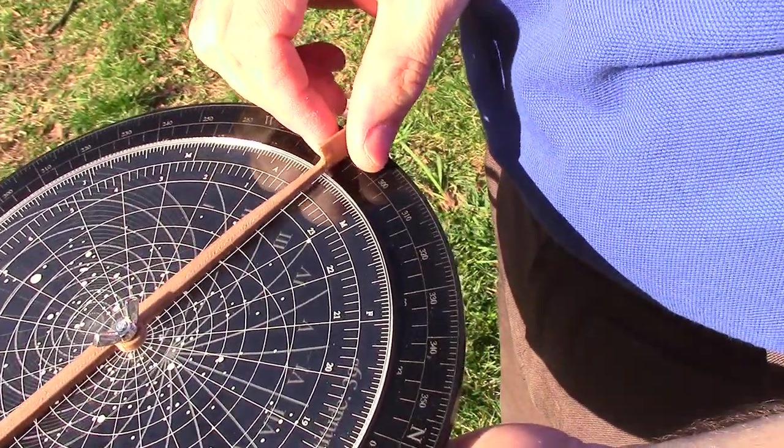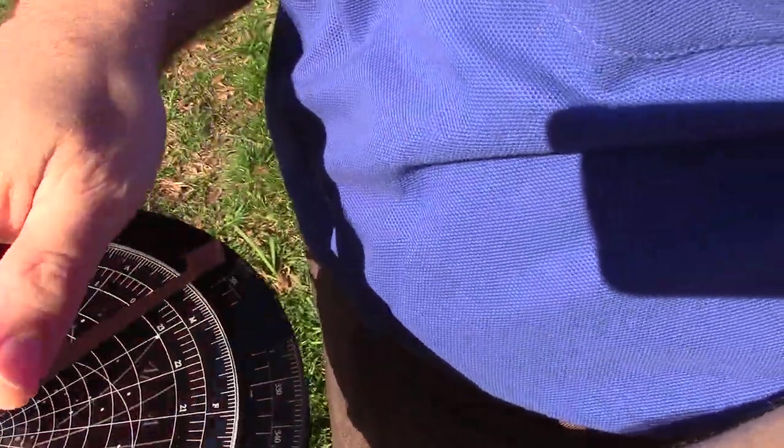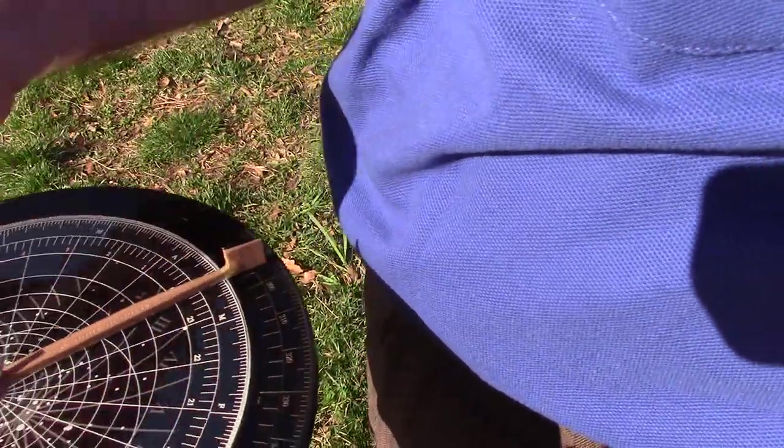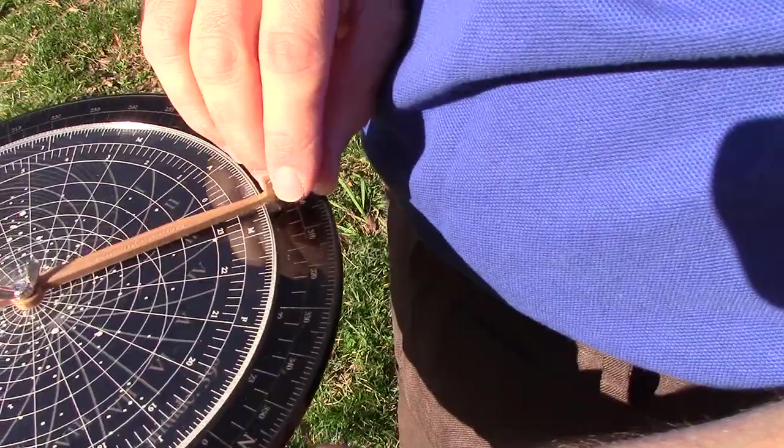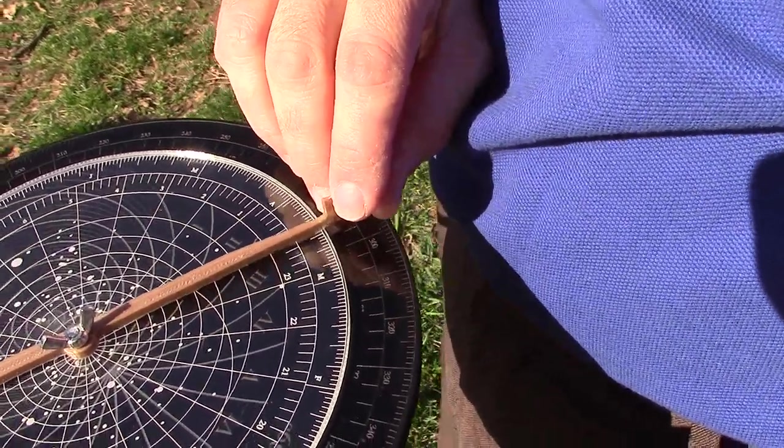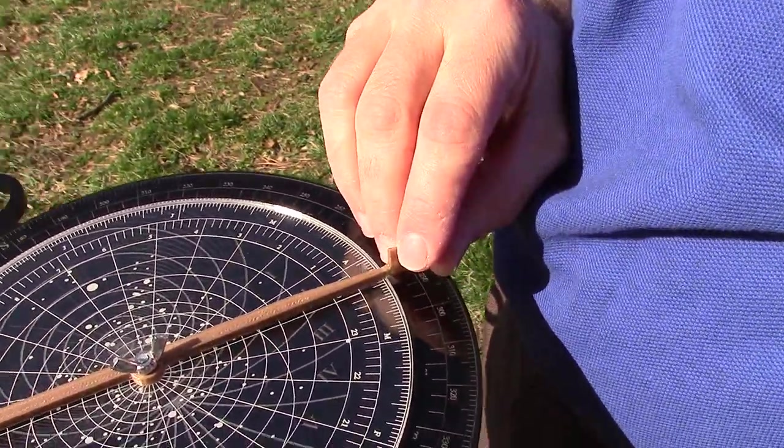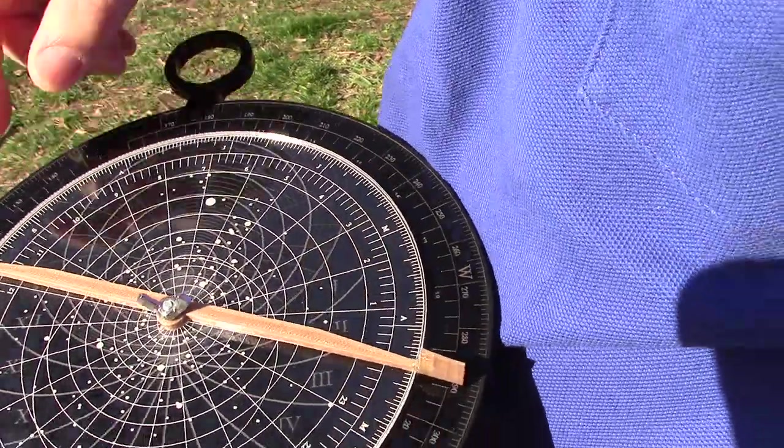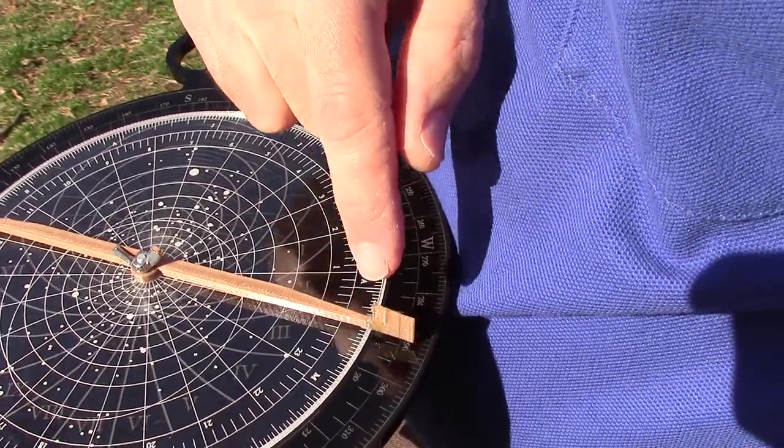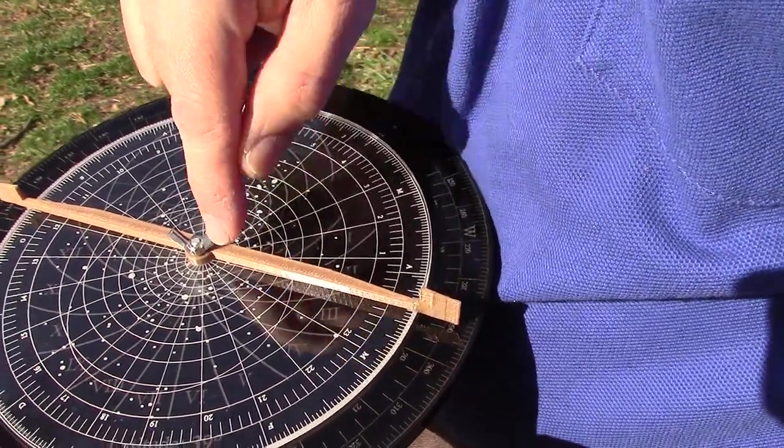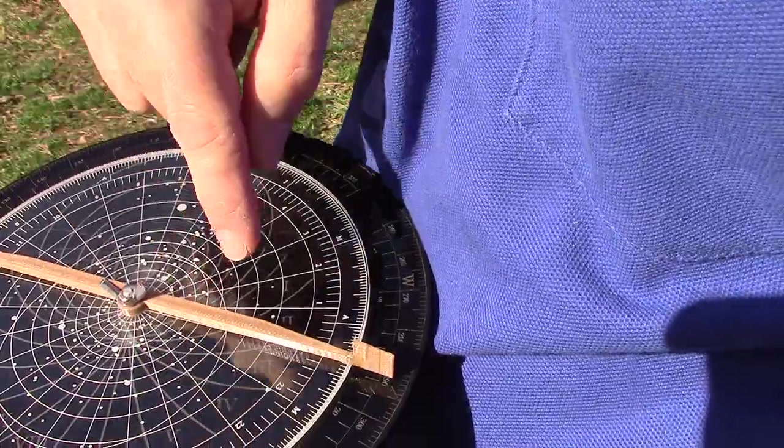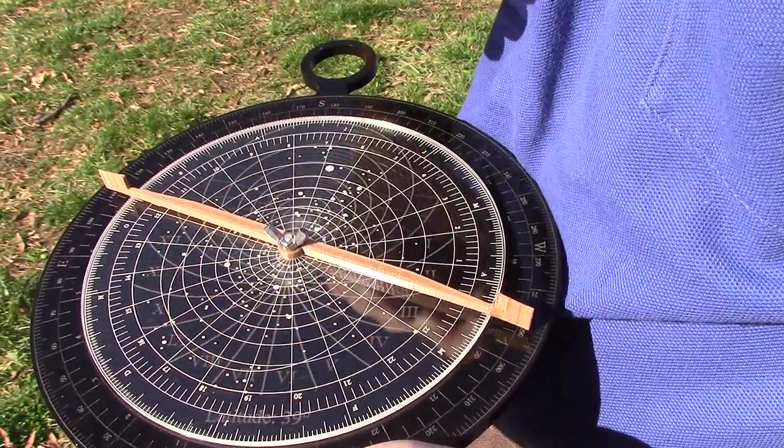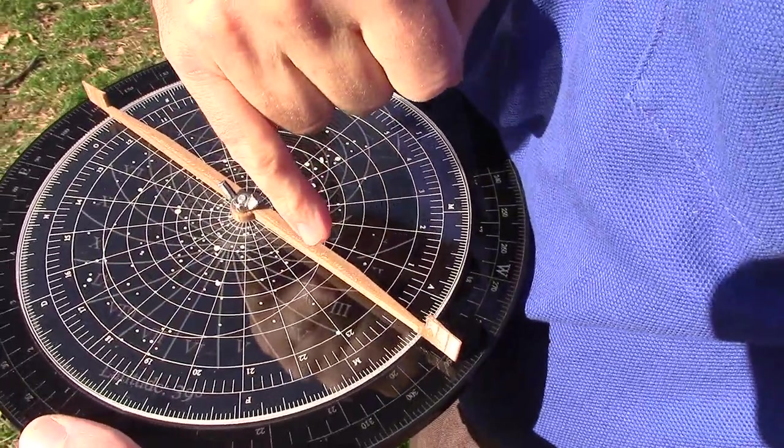Today's March 18th, so you turn the pointer. Take the flat edge of the pointer—make sure you're using the correct edge. The flat edge goes through the center screw. You turn that to March 18th. So here's 5, 10, 15, there's 20, so back to that's 18. Now you look then, where is the Sun in the sky? You look then where this line intersects the offset circle. The offset circle shows the apparent orbit of the Sun through the sky. So the Sun is located there.